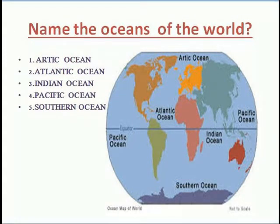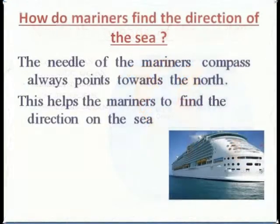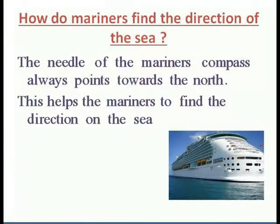Name the oceans of the world. Arctic Ocean, Atlantic Ocean, Indian Ocean, Pacific Ocean, Southern Ocean. How do mariners find the direction at sea?